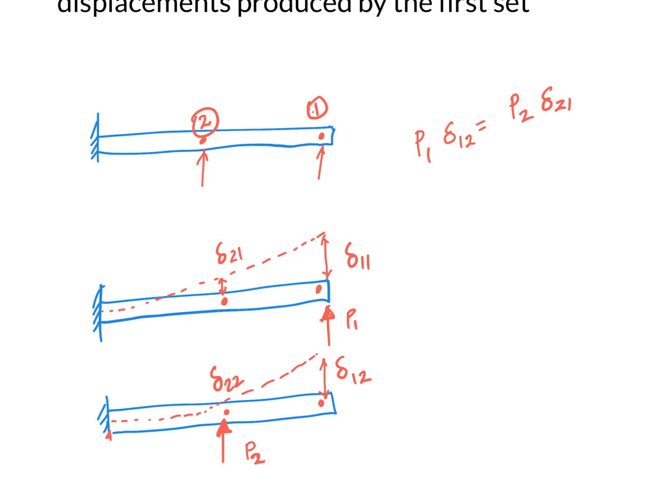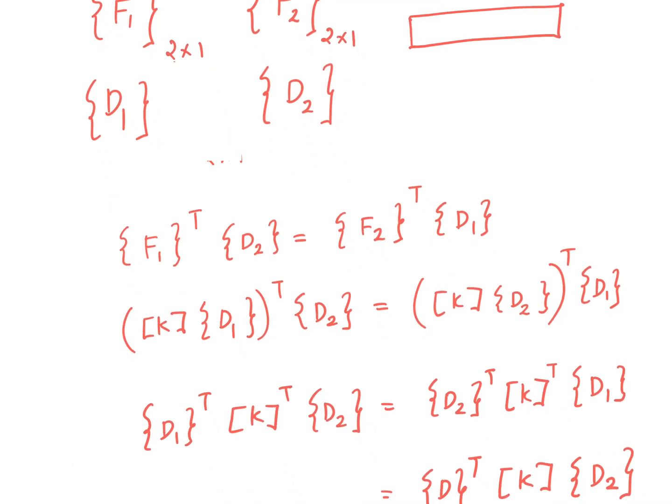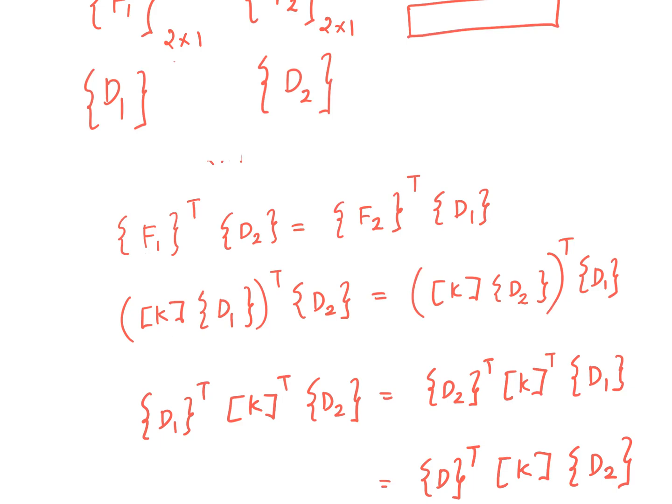So this is our bar element which we talked about a while before. This is the first set of loads and this is the second set of loads. These are matrices of size 2 by 1 and this load set causes this displacement and this load set causes this displacement. So what does Maxwell-Betty reciprocal theorem say? The first set of loads acting through the displacement caused by the second set is equal to the work done by the second set of loads acting through the displacement produced by the first set of loads. Why there is a transpose? Because we are computing the work and work is nothing but the dot product between these two vectors. I can expand this mathematical expression as shown over here. I can substitute F1 like this. AB whole transpose is B transpose A transpose.